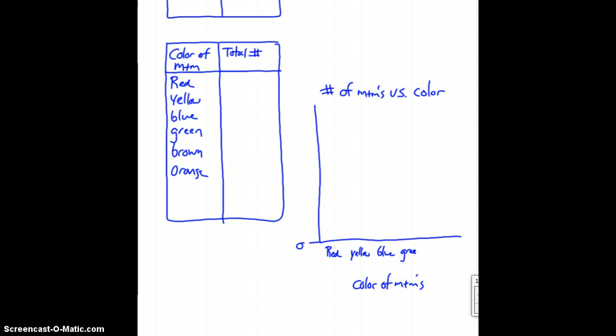I want to write down each color: red, yellow, blue, green, brown, and orange. We're going to be doing a bar graph, so each bar will be a specific color. On the left side, which is our y-axis, this is going to be our dependent variable — how many M&M's there are. You will start at zero, and you can't fill in the numbers until you've actually counted and figured out how many you have of each. Then you can go ahead and do your colored bars.